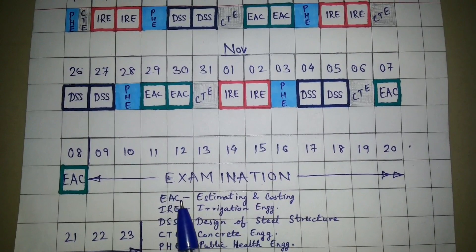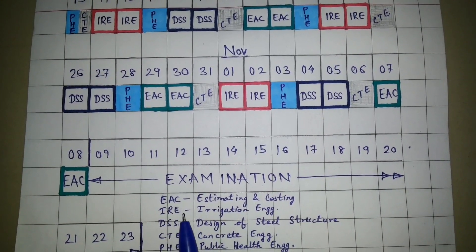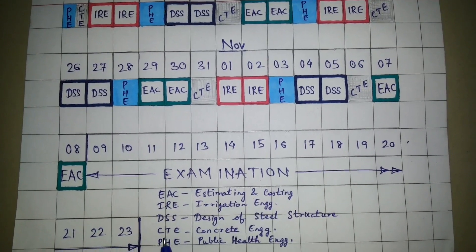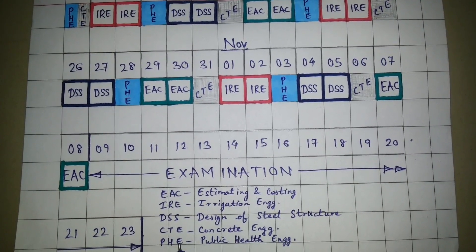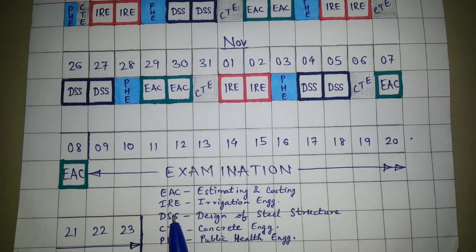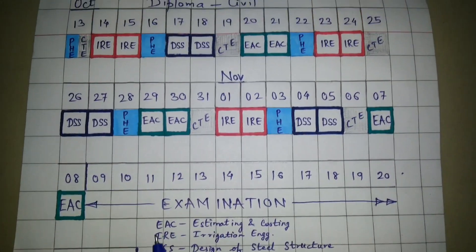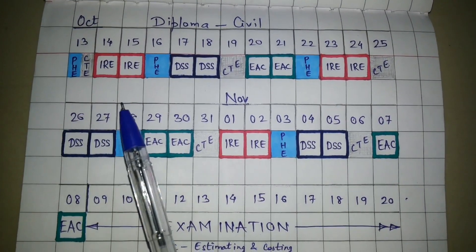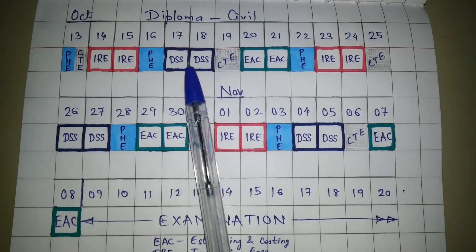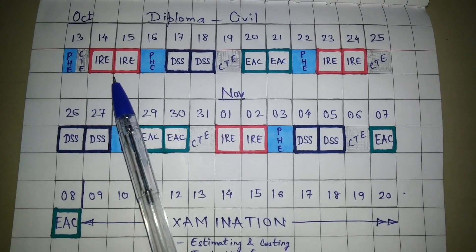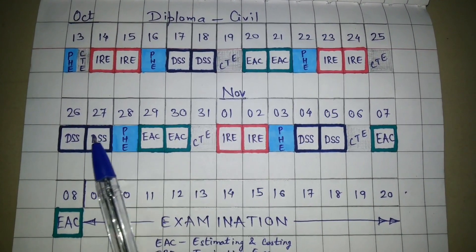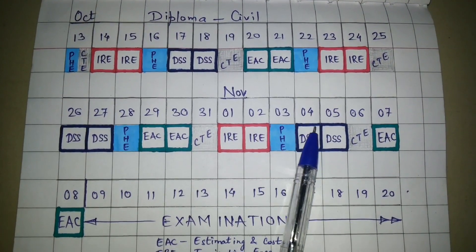EAC, IRE, and DSS will be more time-consuming, while CTE and PHE are comparatively easier. So in this study timetable, I have given more days to IRE, DSS, and EAC — six days for IRE and six days for DSS.